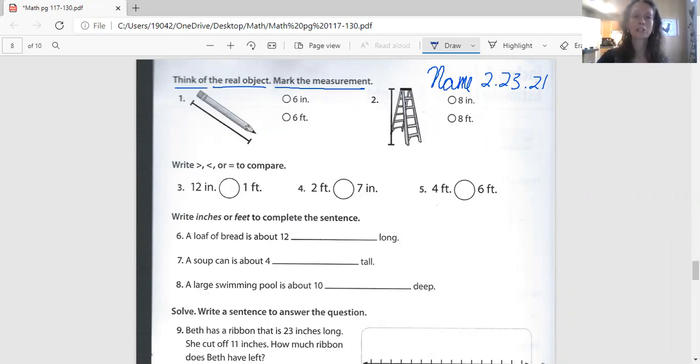I've got a pencil on number one. If you think my pencil is six inches long, color in this bubble. If you think my pencil is six feet long, color in this bubble. Going on to number two. I have a ladder and I'm measuring the height on my ladder. If you think my ladder is eight inches tall, mark this one. If you think my ladder is eight feet tall, mark this one.